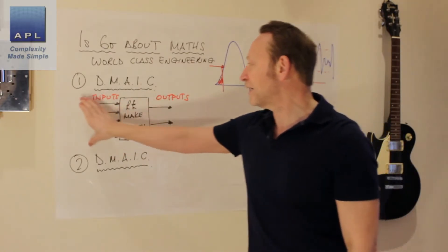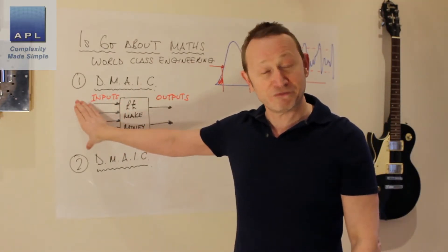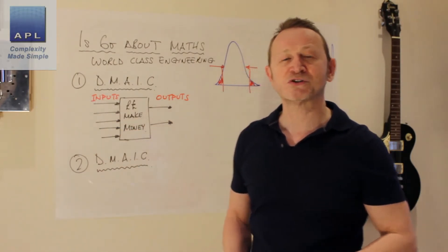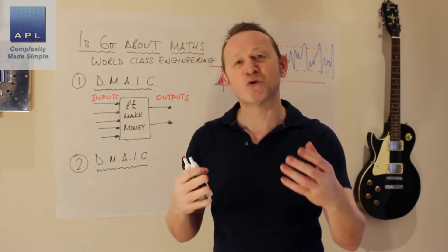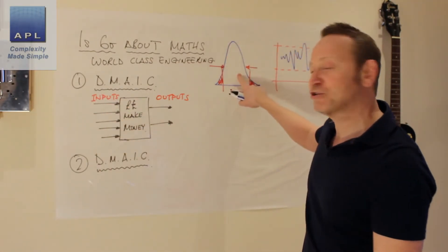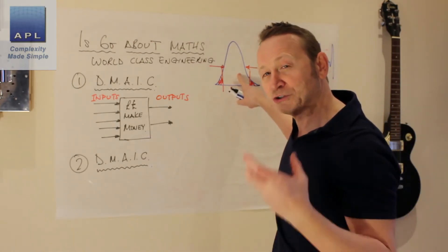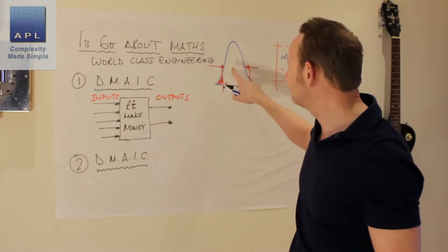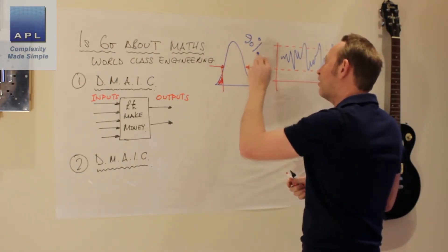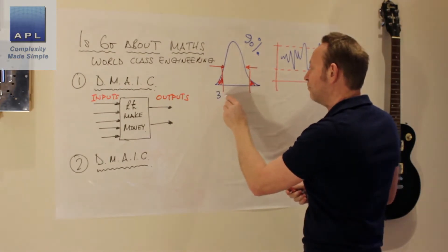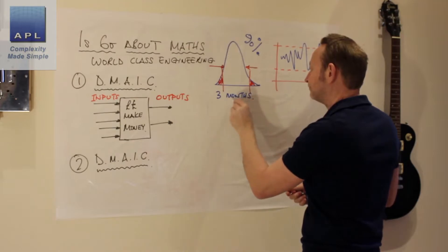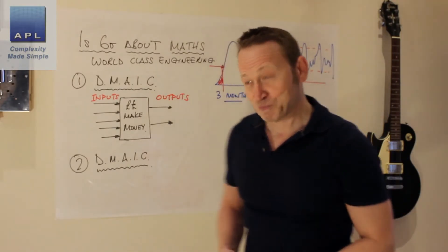When you have this problem, basically what's going on, you have too many of these inputs out of control. Too many of these inputs are being allowed to move around. And all of this variability is causing this problem here. It's often called common cause variability. They say, by the way, 90% of your problems are like this. And by the way, it will take you three months to fix this problem.